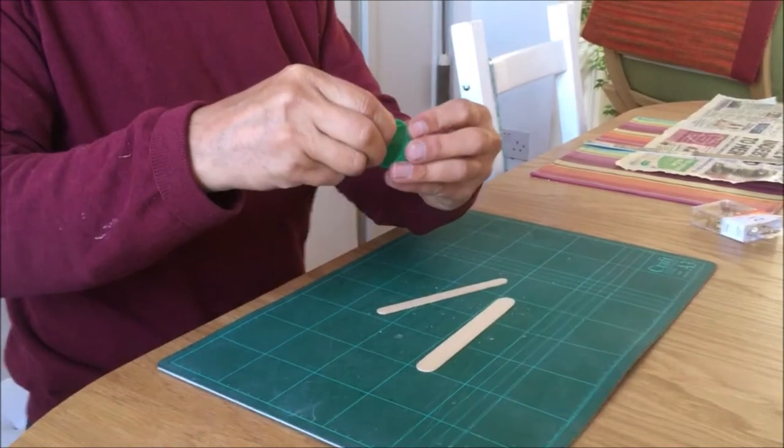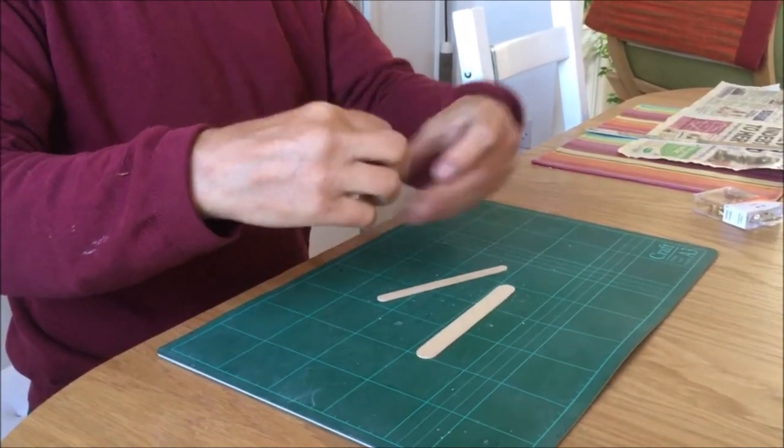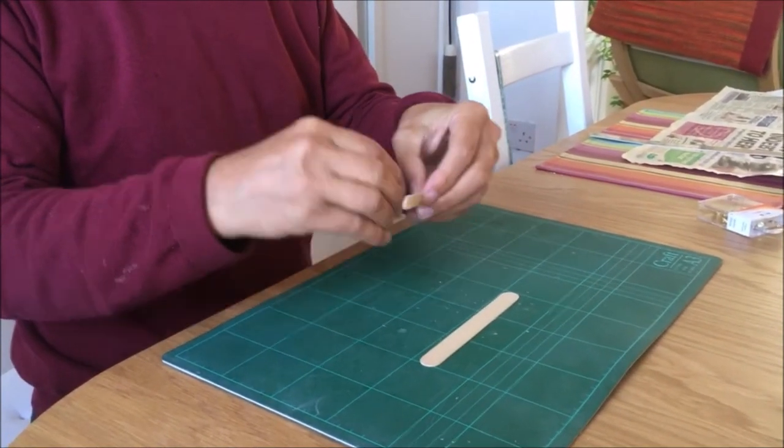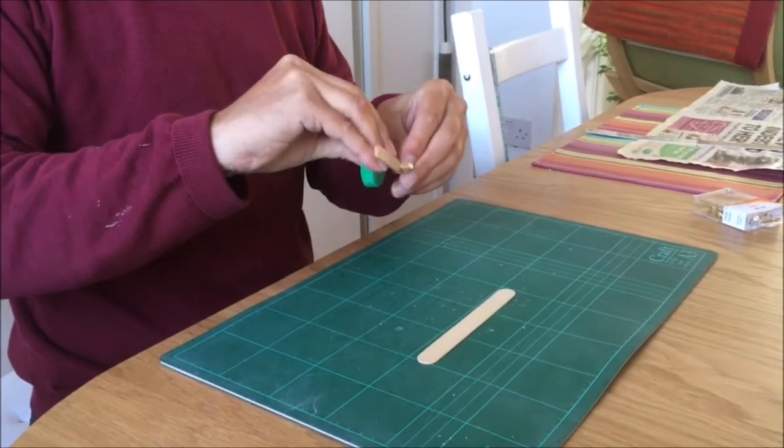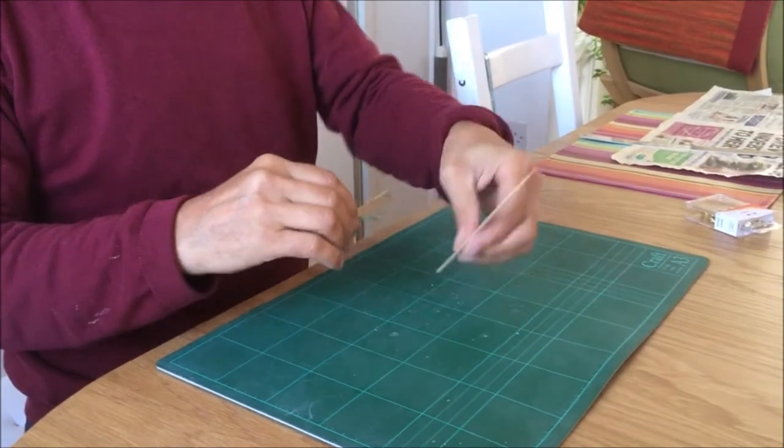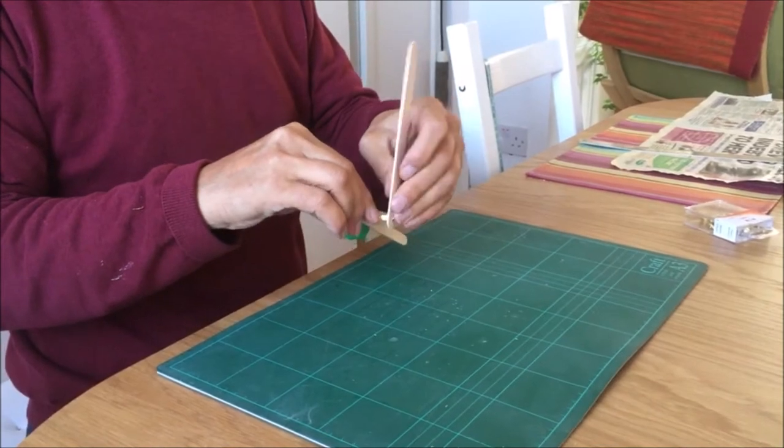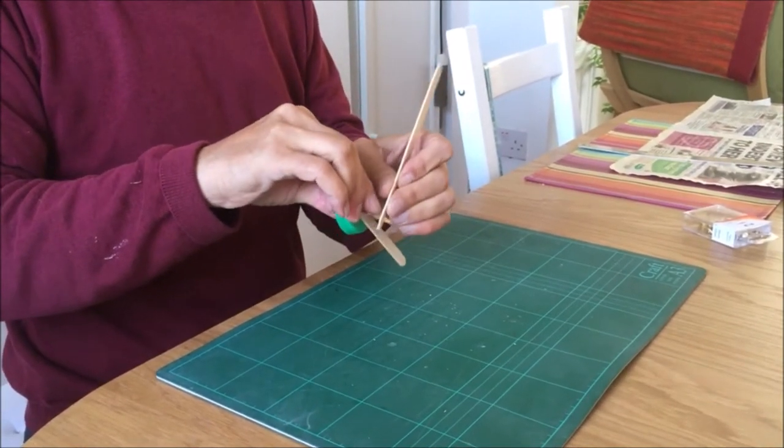Then thread the split pin through these pieces. First of all the bucket, then the arm. Finally the throwing arm. It can be a little bit fiddly.